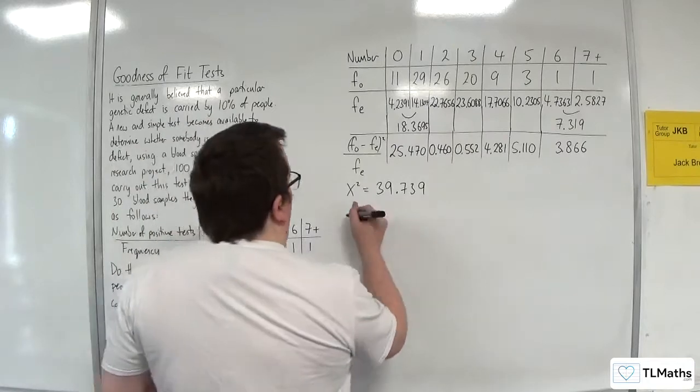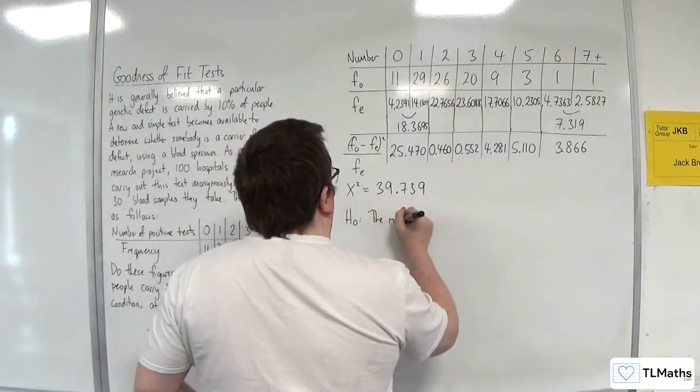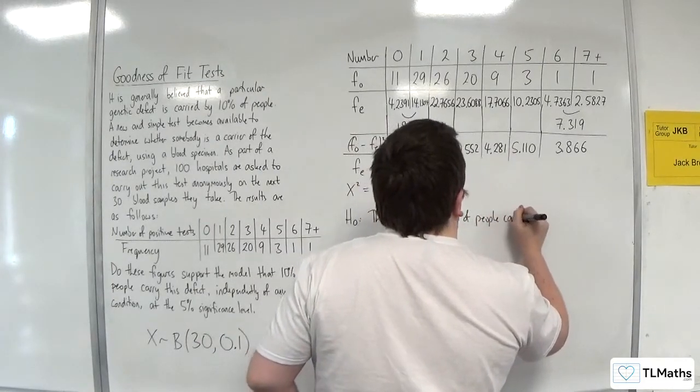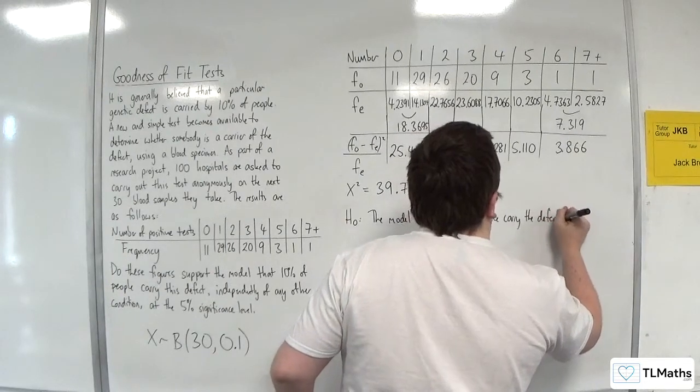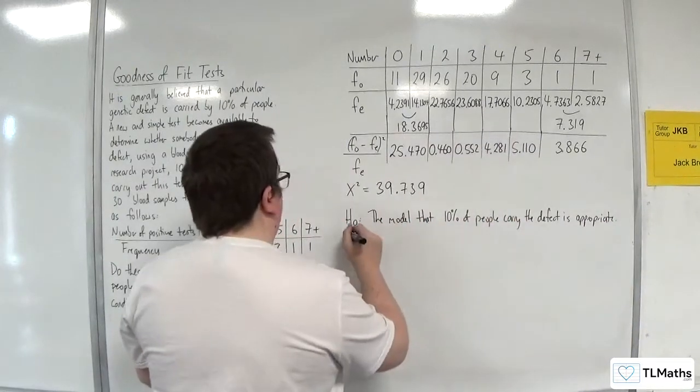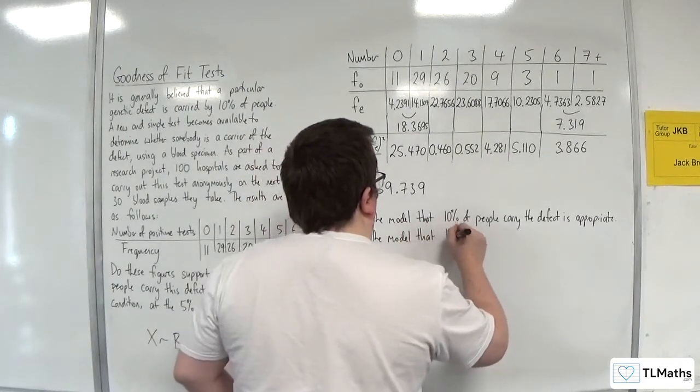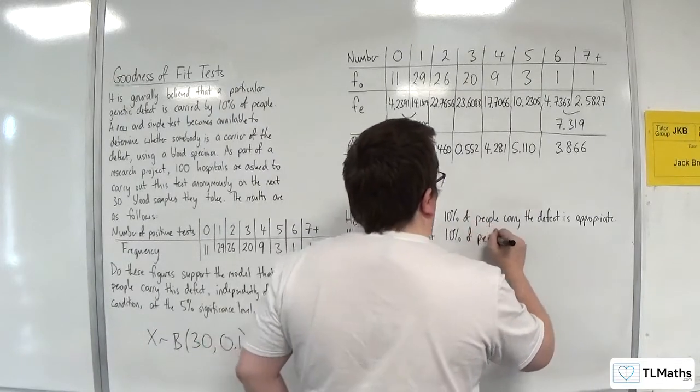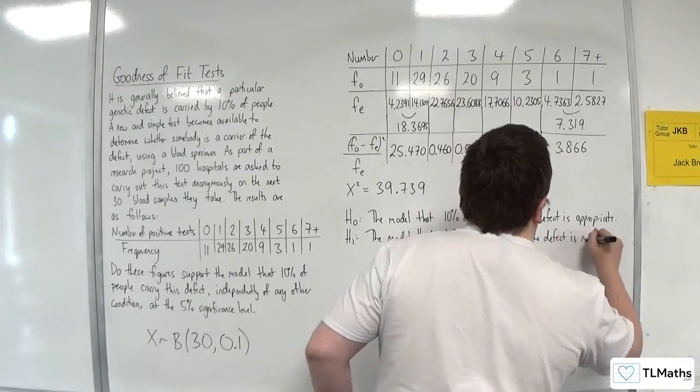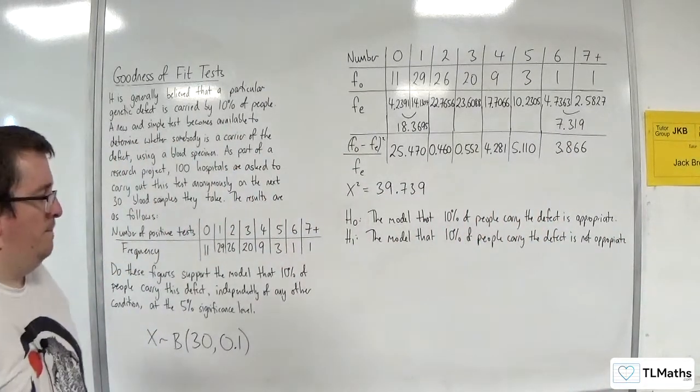So the null hypothesis, we could say the model that 10% of people carry the defect is appropriate. And the alternative, the model that 10% of people carry the defect is not appropriate.